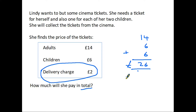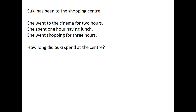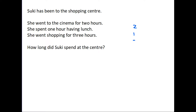Here's a second example. Suki has been to the shopping centre. She went to the cinema for two hours, she spent one hour having lunch, and she went shopping for three hours. We're being asked how long did Suki spend at the centre. Again, there are no word clues, no symbols to tell us which sum we need to do — you have to decide. In this example we need to add up the times: two hours in the cinema, one hour having lunch, and three hours shopping, giving us six hours.